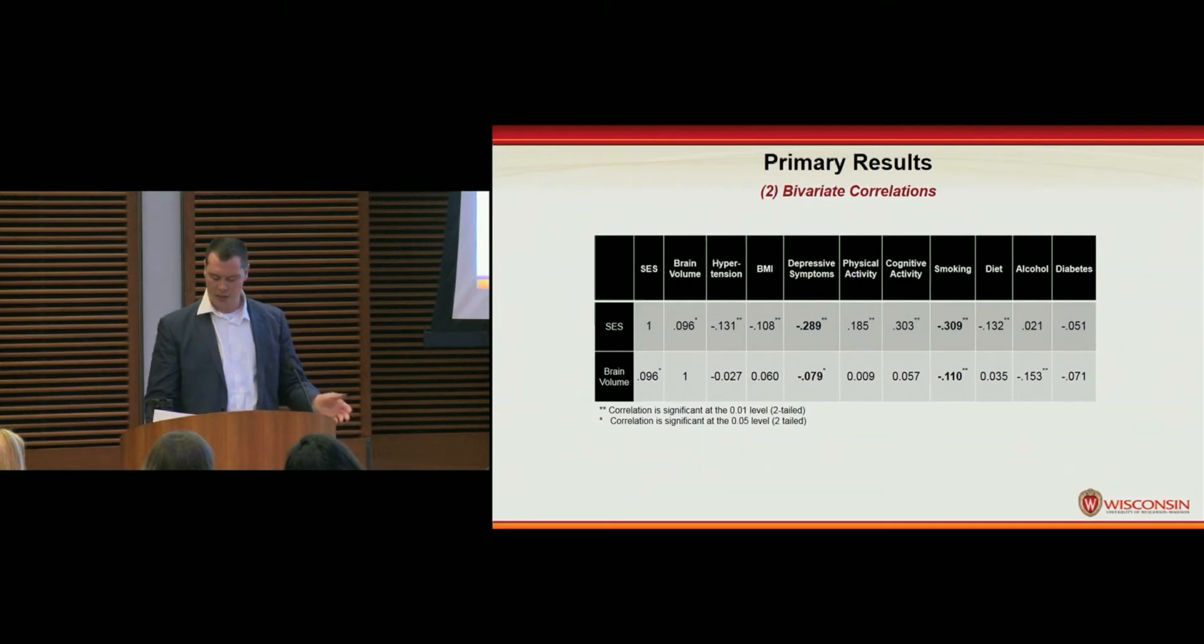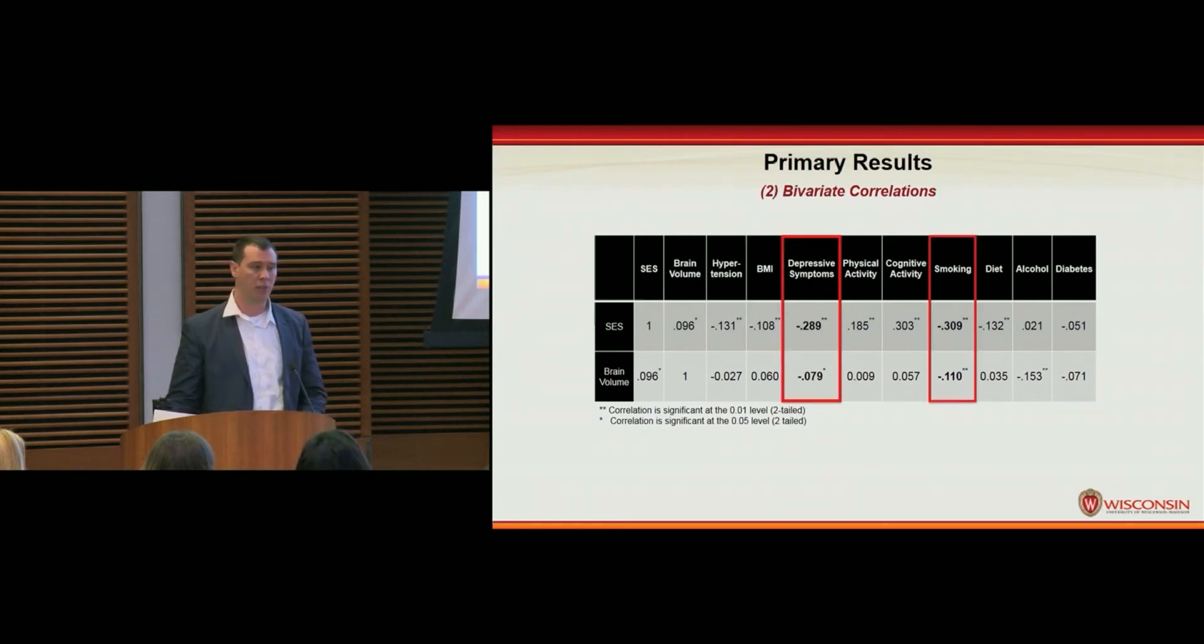Through analyzing this table, we identified two potential mediators due to their significant relationship with both our predictor, which was SES, and our outcome, which was brain volume. Those were depressive symptoms and smoking.